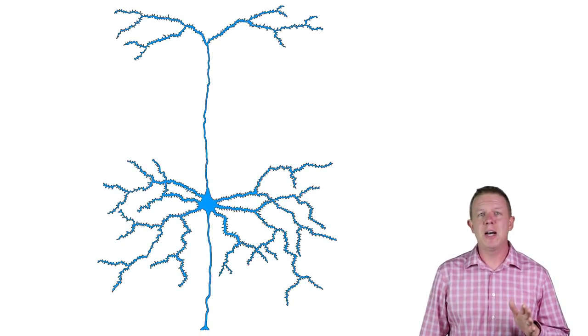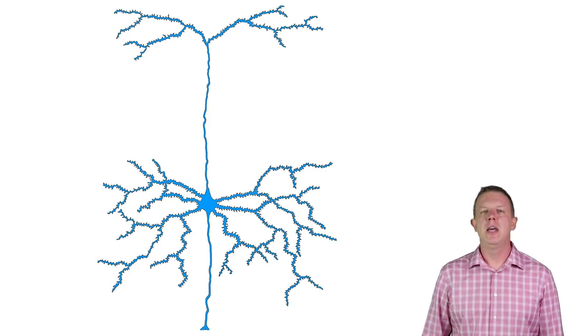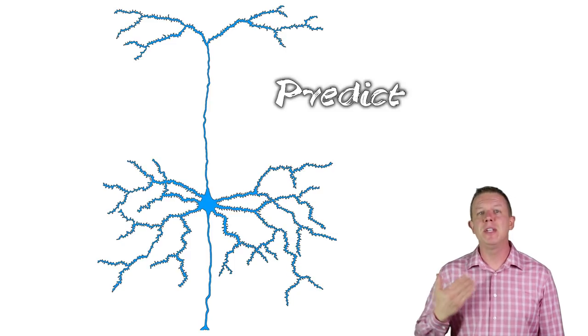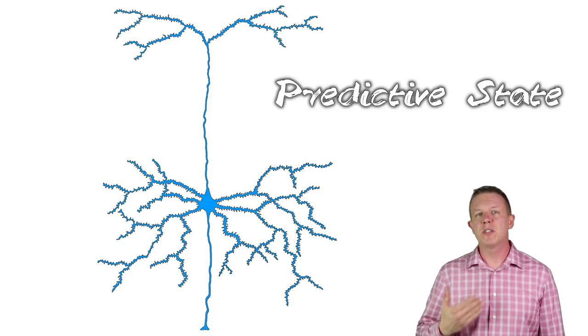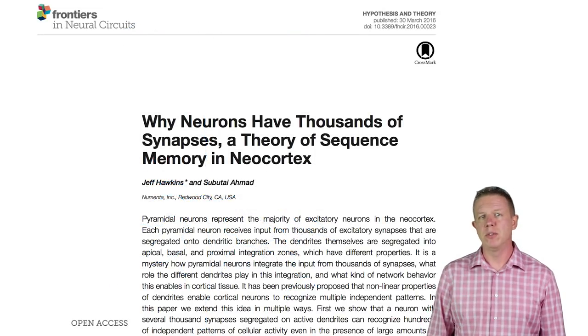For some period of time, it will take less proximal stimulus for it to reach action potential. In HTM, we call this a predictive state of the neuron. We explain its importance in our 2016 paper, Why Neurons Have Thousands of Synapses.